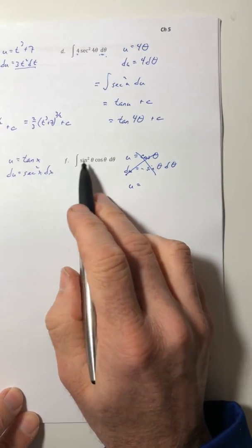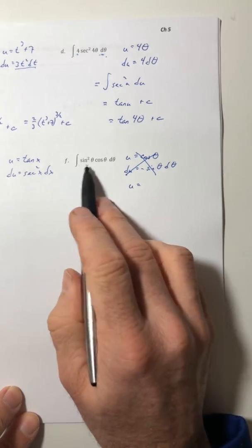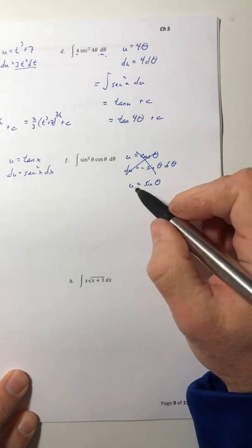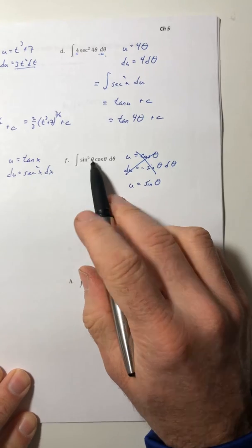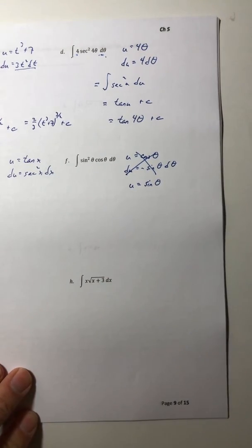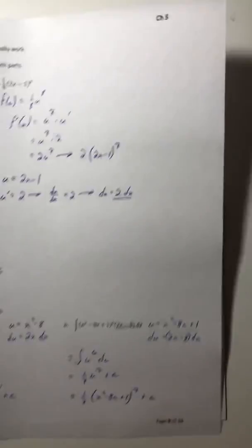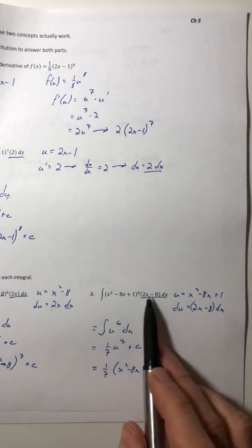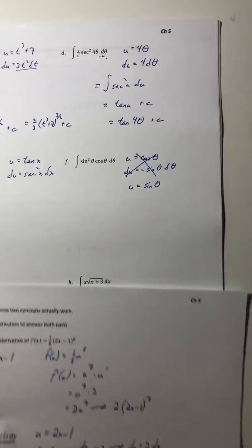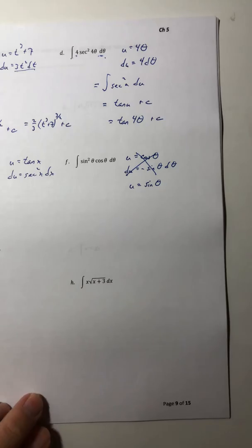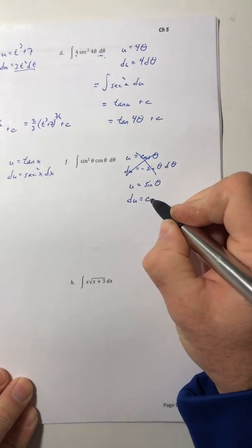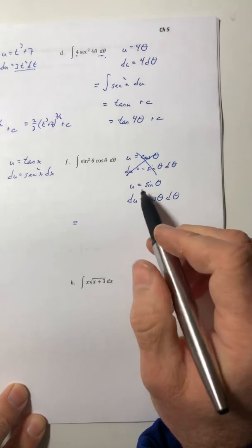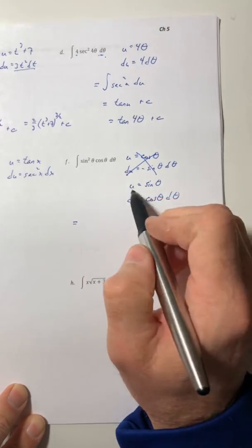And with trig functions, most of the time when you choose the u, it's the function that has the exponent on it. So let's just let u equal sine of θ. I'm not going to take the square because I didn't do that before when you had those quantities. It's like back to part b, you didn't choose (x squared minus 8x plus 1) all to the sixth power, you just chose what was on the inside. Well with this, the inside is just sine of θ. So du is cosine of θ dθ, and now it's going to work. So the sine squared becomes u squared and the cosine theta d theta becomes du.